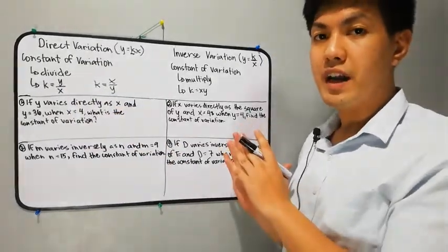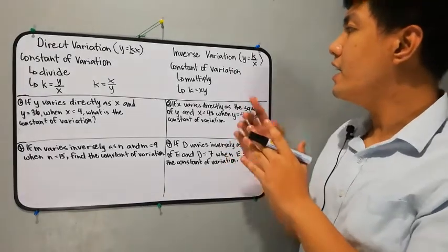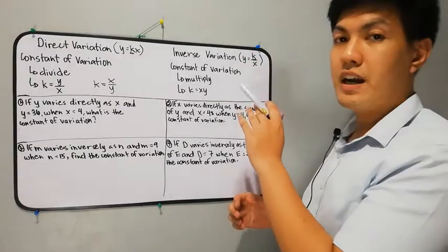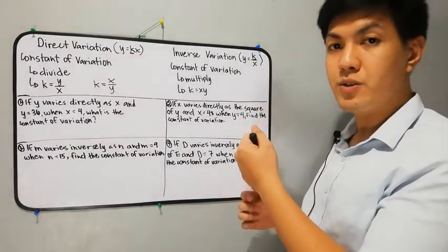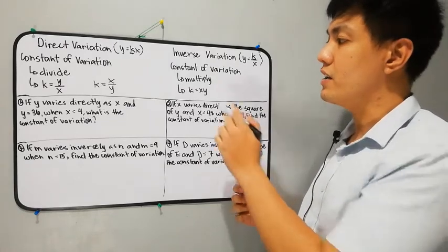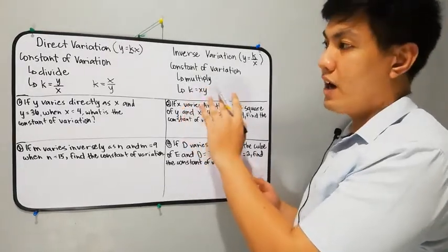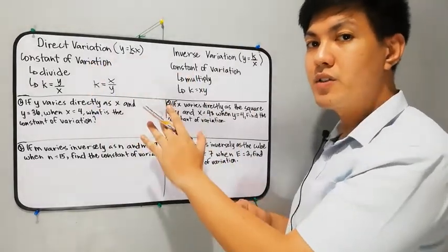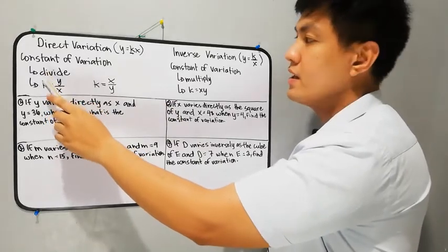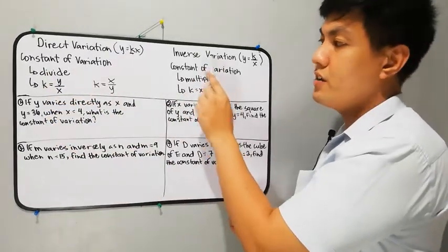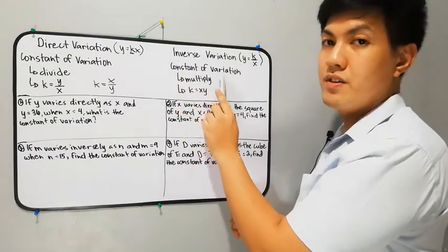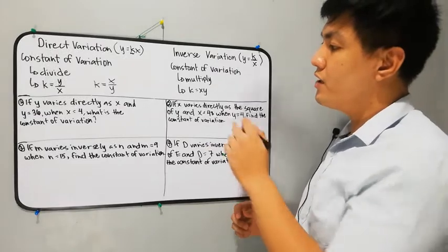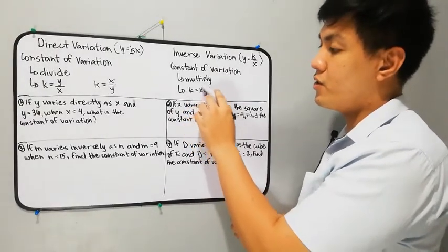For inverse variation, the equation is y is equal to k over x. For the constant of variation, the operation to be used is multiplication. So comparing the two: for direct variation, to find the constant, we divide. For inverse variation, to find the constant, we multiply the two values. The formula is k is equal to xy.